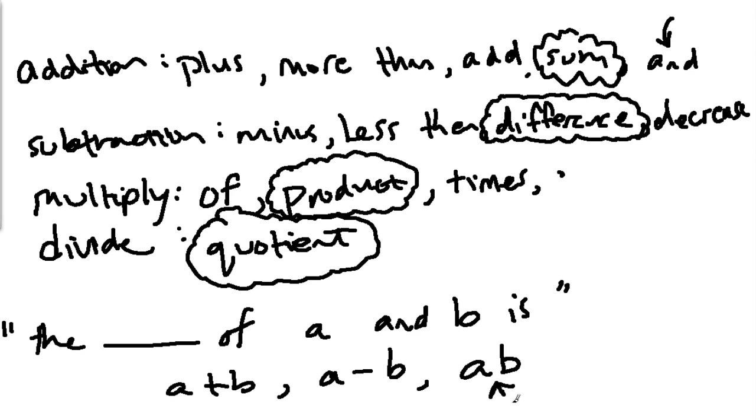Why did I write ab? In algebra, if you write two letters next to each other, that's a shortcut for writing one number times the other. This is a really important shortcut. And then the quotient of a and b is, well, a divided by b. Notice these are all expressions because none of them have the equal sign.